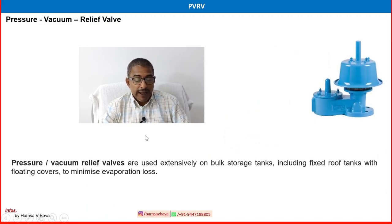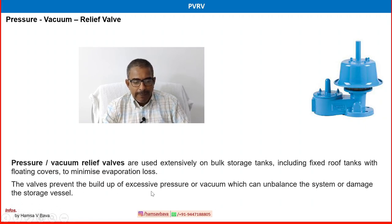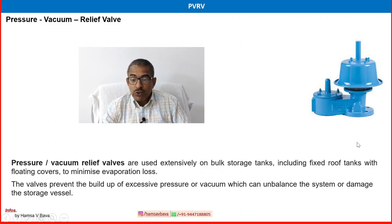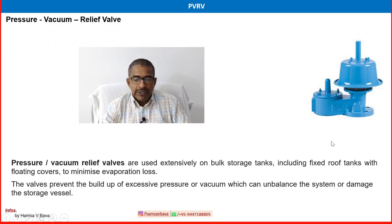One more valve to cover at the end of this video: the pressure vacuum relief valve (PVRV). Pressure vacuum relief valves are used extensively on bulk storage tanks, including fixed roof tanks with floating covers, to minimize evaporation loss. This valve prevents the buildup of excessive pressure or vacuum, which can unbalance the system or damage the process vessel. It works in both directions — releasing excess internal pressure externally, and allowing atmospheric air or gas inside when vacuum conditions develop.